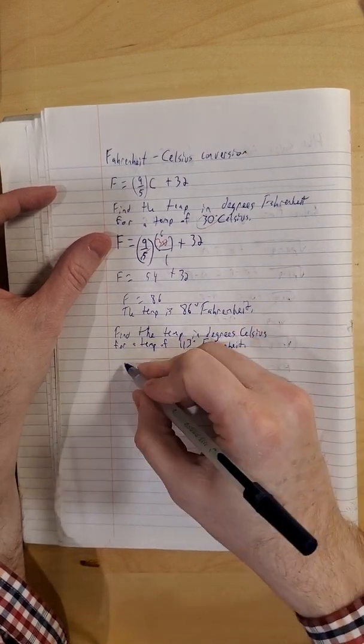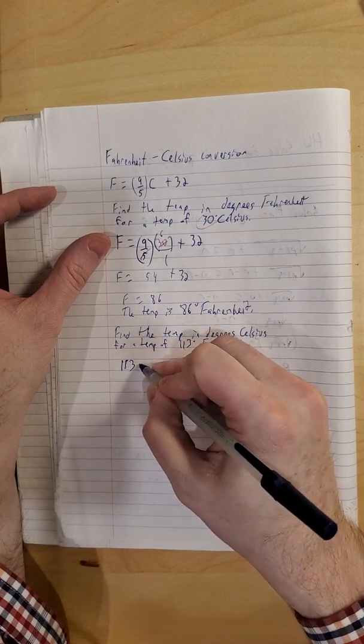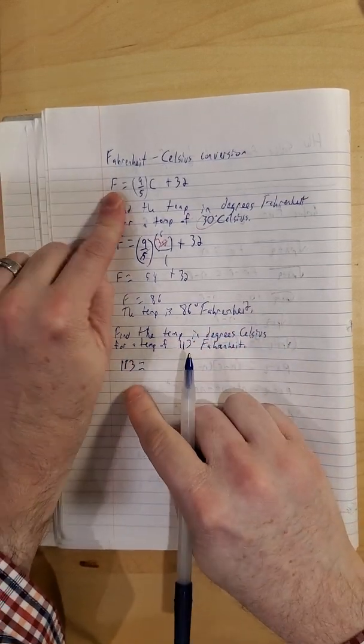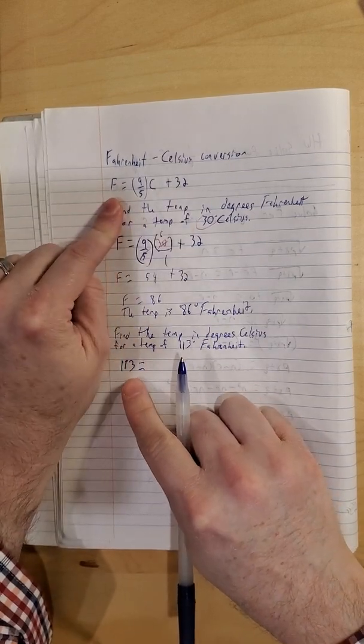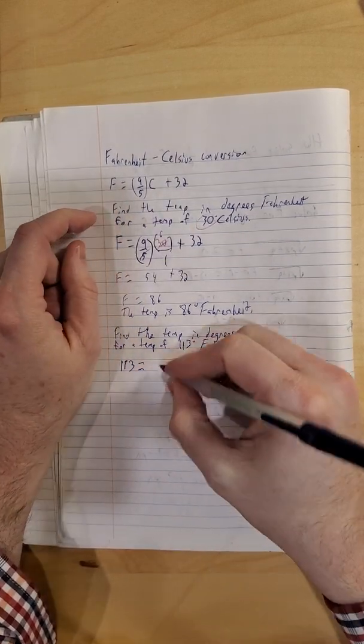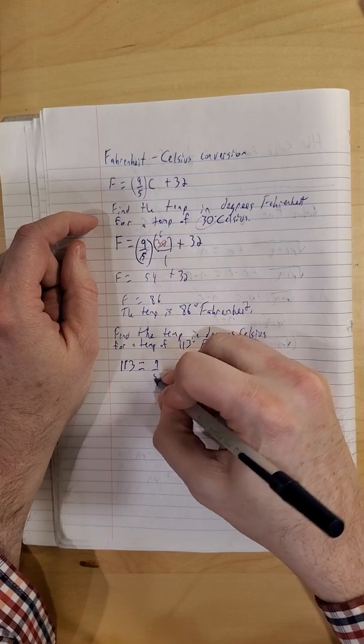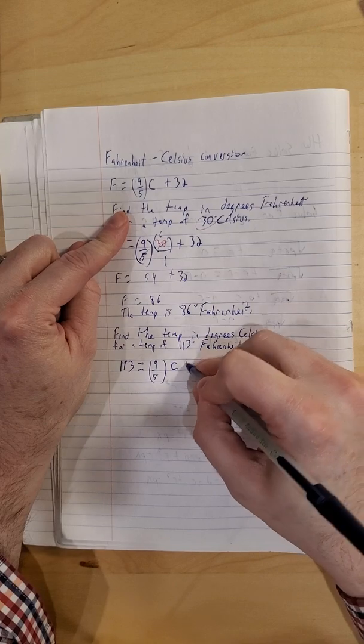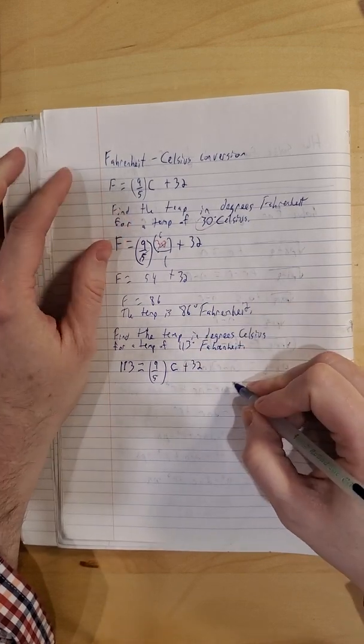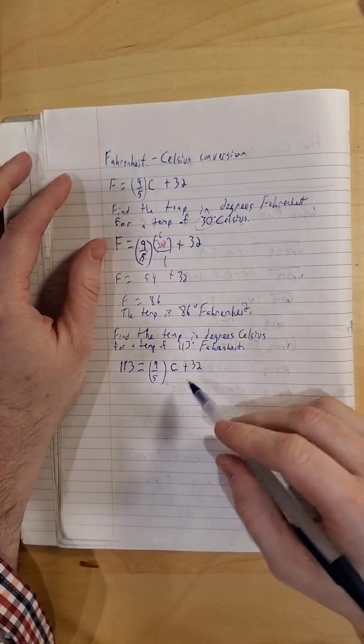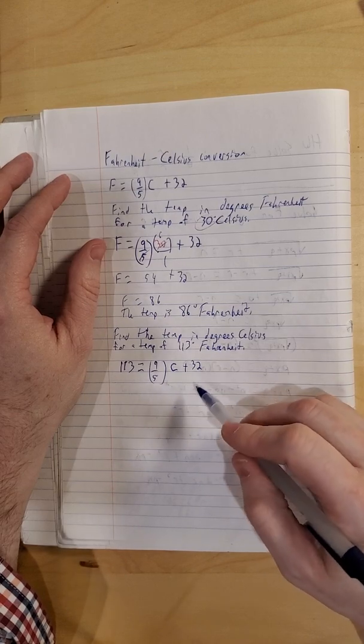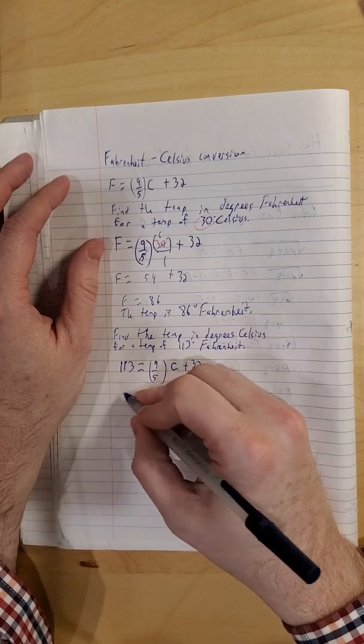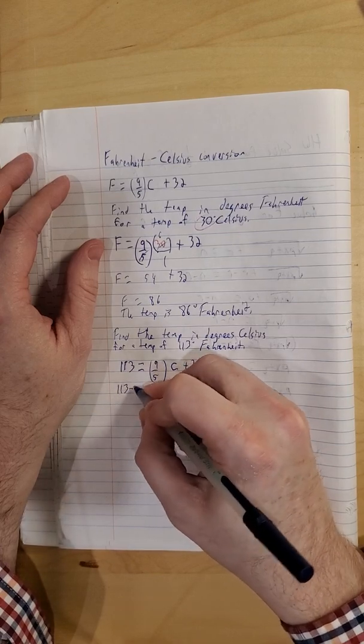So this time we do know the F, so that is 113. Usually I would put it in parentheses, but notice in the formula it was already by itself. Nine-fifths is still there. This time we don't know what C is. C stays as a variable and we have our plus 32. So if I'm solving this thing, just like if this were a linear equation, subtract 32 on both sides. That's exactly what we'll do this time.